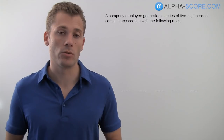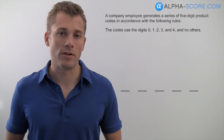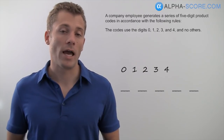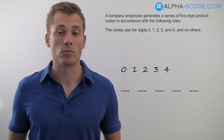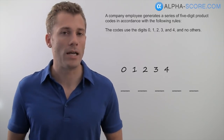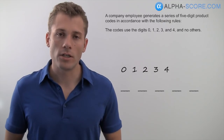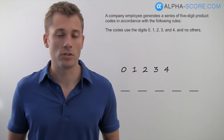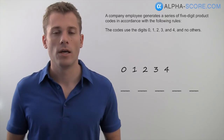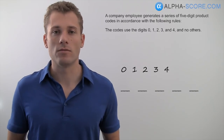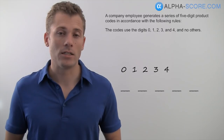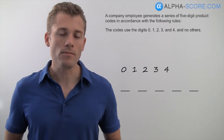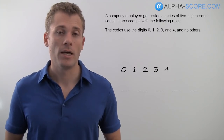Then we move on to our rules. Our first rule really gives us our list of entities: the codes use the digits zero, one, two, three, and four — and no others, meaning we're only using zero through four and nothing else will jump in. As with all logic games, you want to write down your list of entities. In other logic games you might be given names and you'd grab the first letter, but here we simply put down zero, one, two, three, four. Now we've got our basic diagram and list of entities.